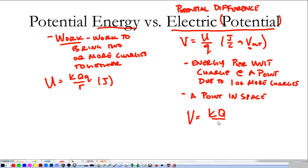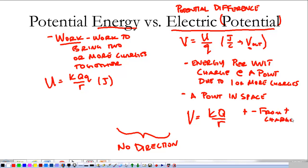It only takes one charge to calculate this. Voltage is KQ over R. What's important to note about both of these things is that there is no direction. Positive and negative have nothing to do with direction, and everything to do with what charges we have. Positive potential is from positive charges, negative potential is from negative charges. Finding the potential is much easier than finding the electric field.